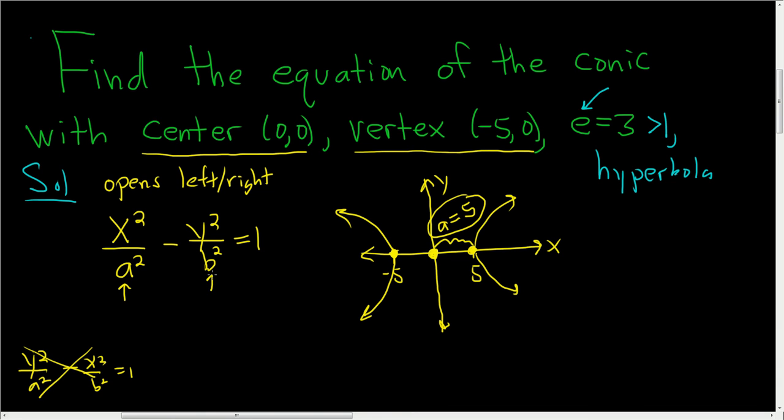We just have to find b. So it looks like we're going to go back and use the eccentricity one more time. The eccentricity is equal to 3. It's also equal to c/a. It's a formula for the eccentricity of both a hyperbola and an ellipse. It's always c/a. And we know something about a. It's 5. So this is c/5. And if we multiply both sides by 5, we end up with c equals 15.